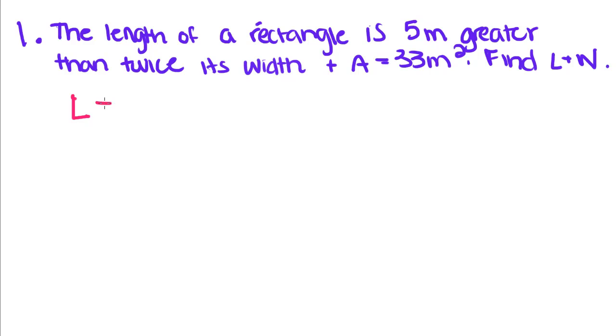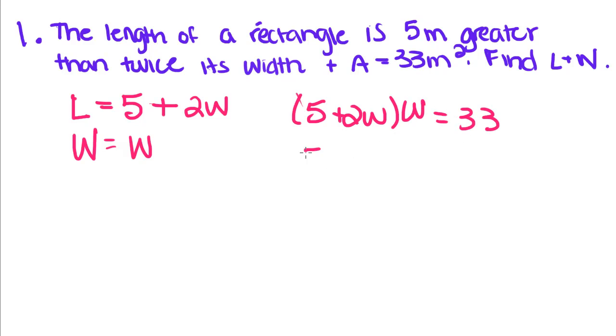Find the rectangle's length and width. So the length of a rectangle is 5 meters greater, so 5 plus twice its width, so 5 plus 2W. Its width is going to be equal to just plain W. So its area is equal to 33 meters squared. So that means that its length times its width is equal to 33.